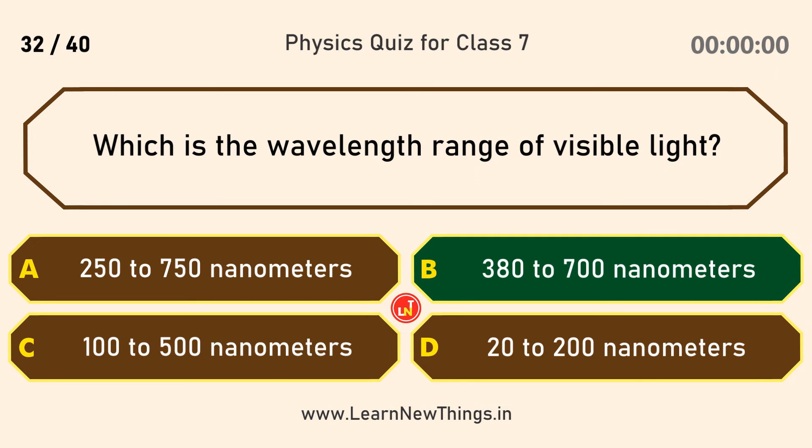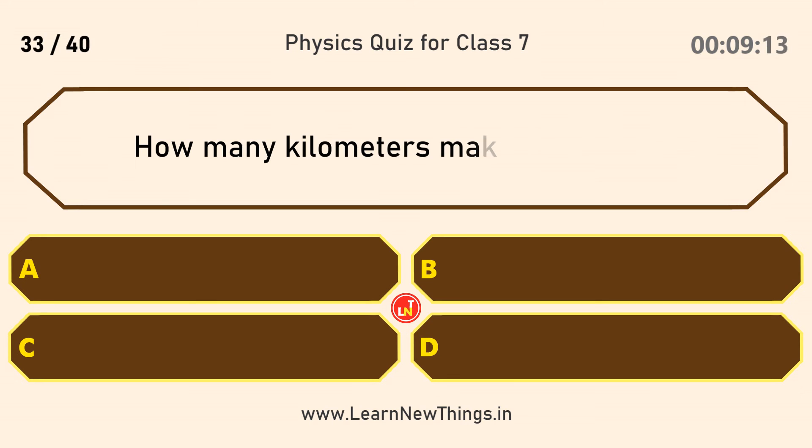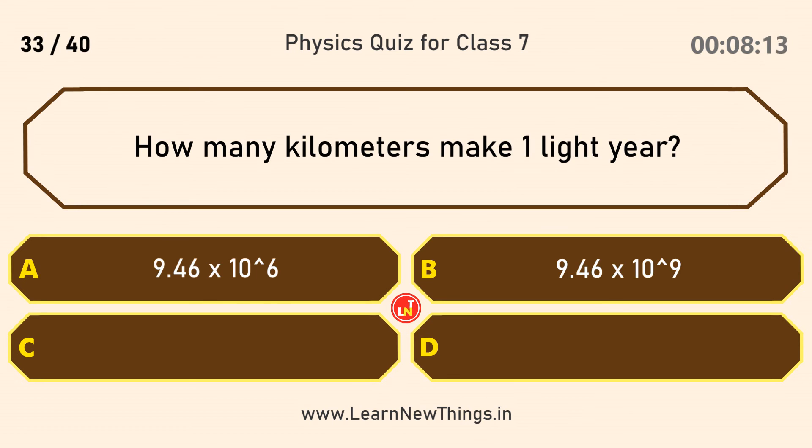Which is the wavelength range of visible light? 380 to 700 nanometers.